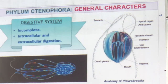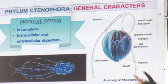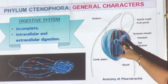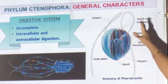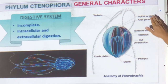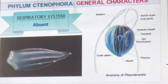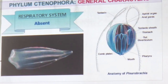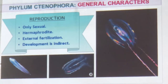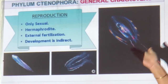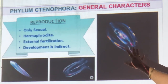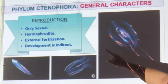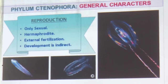The digestive system in Ctenophora is incomplete. You can see the gut is incomplete. Both intra- and extracellular digestion take place. A mouth, pharynx, and stomach are developed — after that nothing more has developed. No respiratory system — they respire throughout the body with water. Circulatory system is absent. Reproduction is only sexual — hermaphrodite with both male and female organs. External fertilization, eggs outside, development is indirect through larvae.